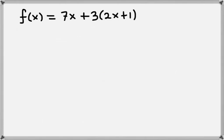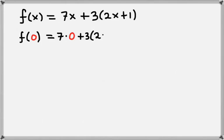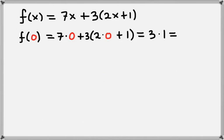Let's evaluate this function at 0. We're going to plug in 0 for x. Then we have plus 3 times 2 times 0, plus 1. We need to work through what this is. Well 7 times 0 is just 0. Then we have plus 3 times the quantity 2 times 0 plus 1. Inside those parentheses, 2 times 0 is 0, plus 1, so that's really just 3 times 1, which is 3.